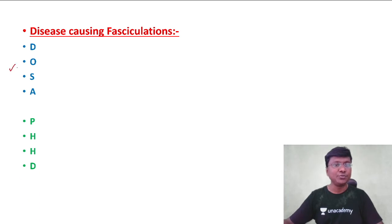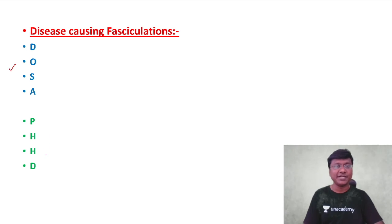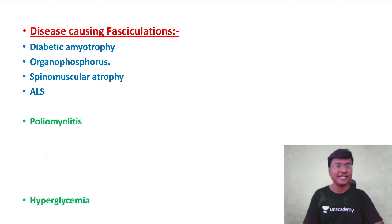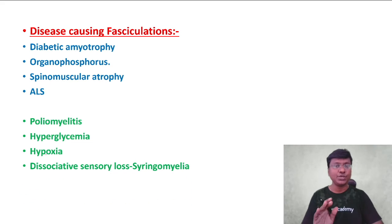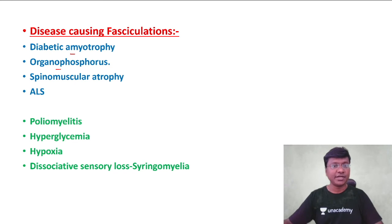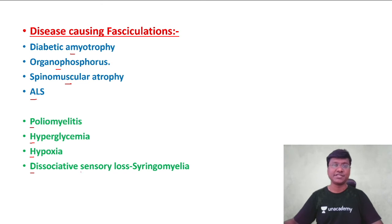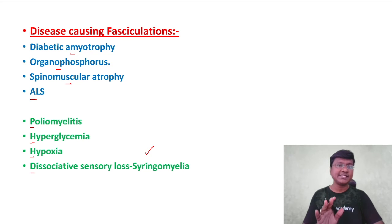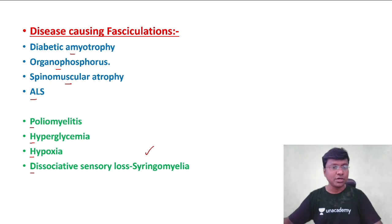Now you should know what conditions cause fasciculations. The mnemonic for this is DOSA PHD: Diabetic amyotrophy, Organophosphorus poisoning, Spinomuscular atrophy, Amyotrophic lateral sclerosis, Poliomyelitis, Hyperglycemia, Hypoxia, and Dissociative sensory loss condition — which is syringomyelia. These are all the conditions where you will see fasciculations.